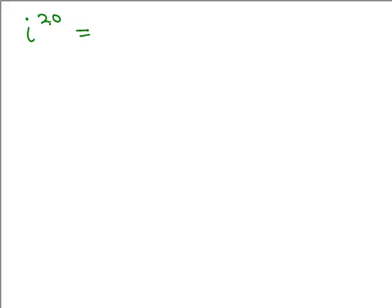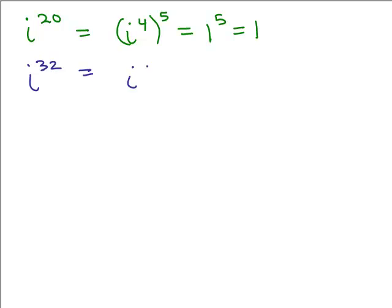Let's say we're doing i to the 20th. Any time you have an exponent that 4 goes into evenly, we can write that as i to the 4th to some power. So that's i to the 4th to the 5th power, which is 1 to the 5th, or just 1. Similarly, i to the 32nd — 4 goes into 32, so you'd get 1 to the 8th, which is also 1.